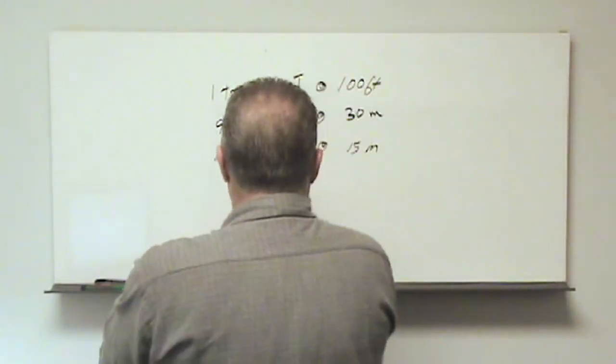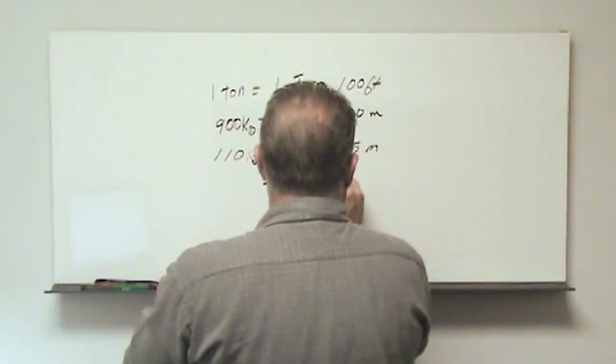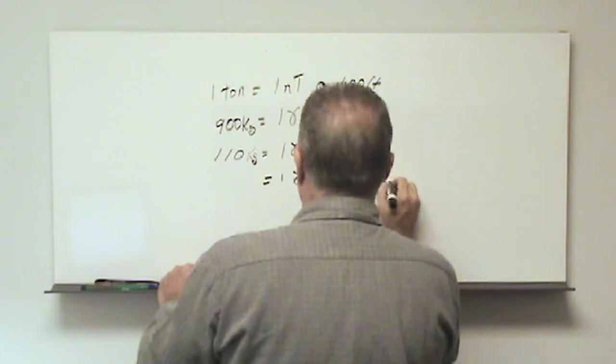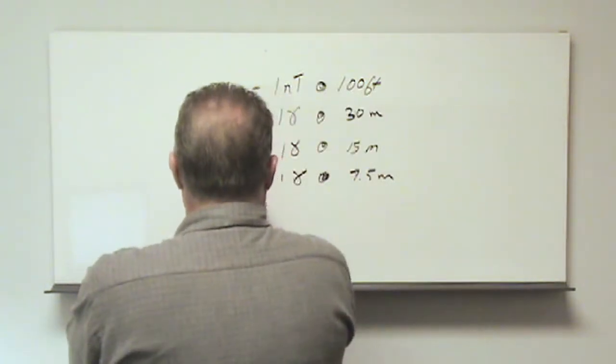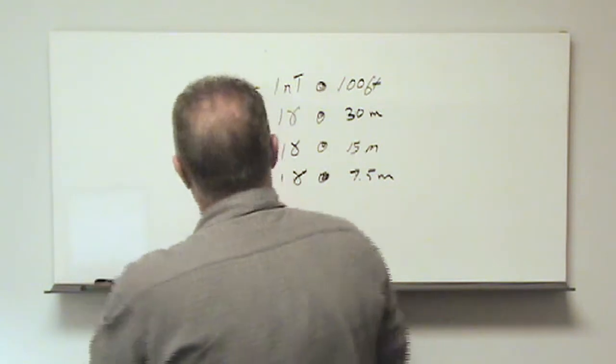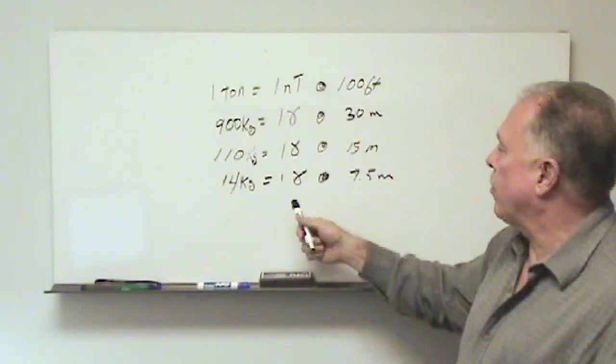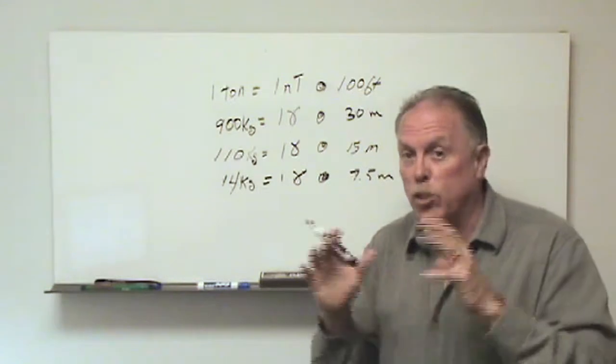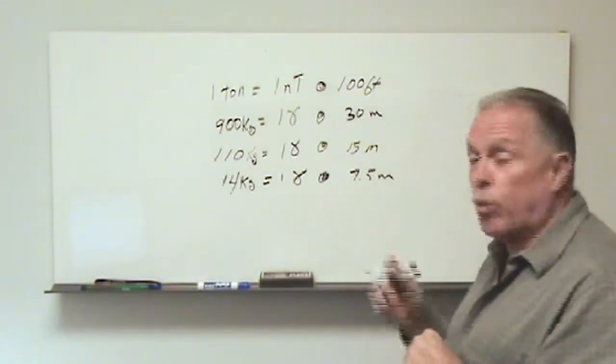And just to finish this out, one gamma at 7.5 meters, and eight goes in here approximately 14 times. So now we would see 14 kilograms at 7.5 meters. So we can see again, we can see a very small target at quite a large range.